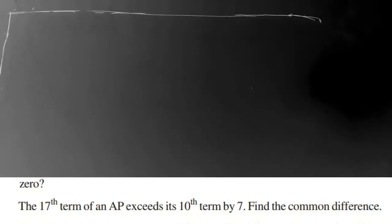Hi my dear friends, in this video we are going to learn Progressions, Exercise Number 2, Question Number 9. The 17th term of an AP exceeds its 10th term by 7. Find the common difference.